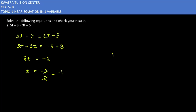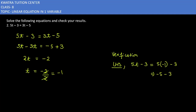Now we check the result by verification. Taking the left hand side: LHS is 5t minus 3. Substituting t equals minus 1, we get 5 times minus 1 minus 3, which equals minus 8.